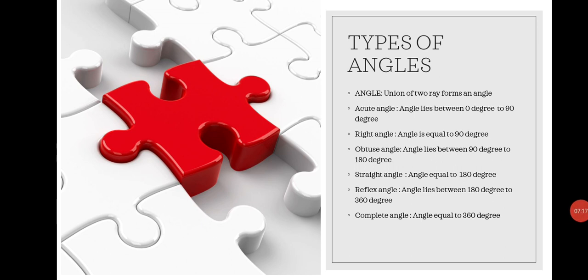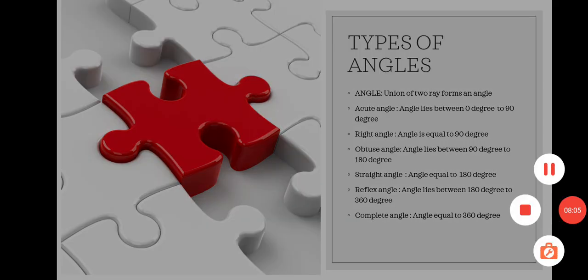Children, now we again recollect the types of angles. Angle: union of two rays forms an angle. Acute angle: angle lies between 0 degrees to 90 degrees. Right angle: angle is equal to 90 degrees. Obtuse angle: angle lies between 90 degrees to 180 degrees. Straight angle: angle equal to 180 degrees. Reflex angle: angle lies between 180 degrees to 360 degrees. Complete angle: angle equal to 360 degrees.